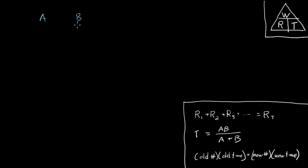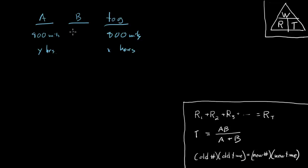We are told that machines A and B working together can produce 800 nails in X hours. Machine A working alone can produce 800 nails in Y hours. We're asked how long it's going to take machine B to make 800 nails by itself.